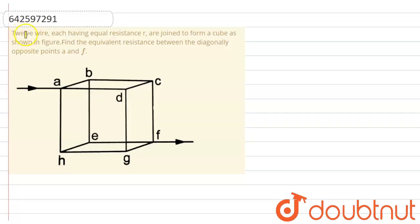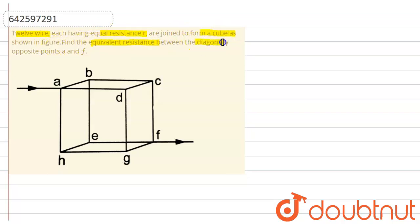This problem says that 12 wires, each having equal resistance that is small r, are joined to form a cube as shown in the figure. Find the equivalent resistance between the diagonally opposite points A and F.